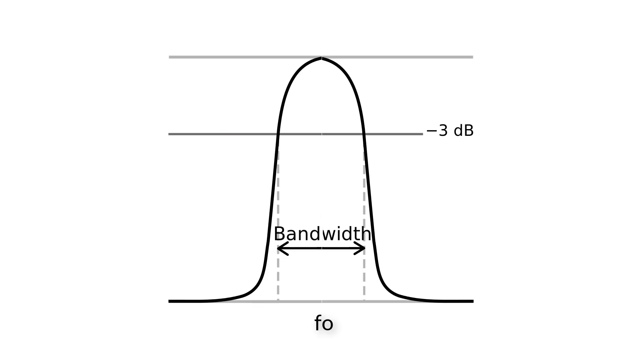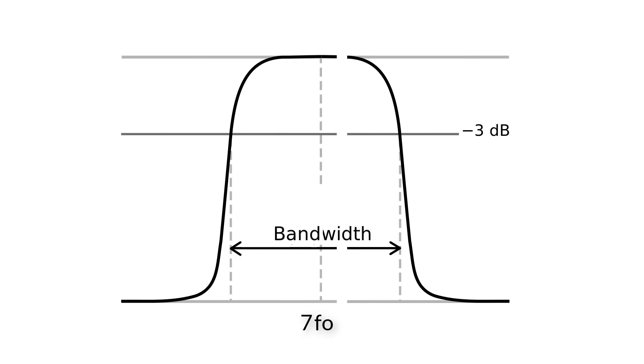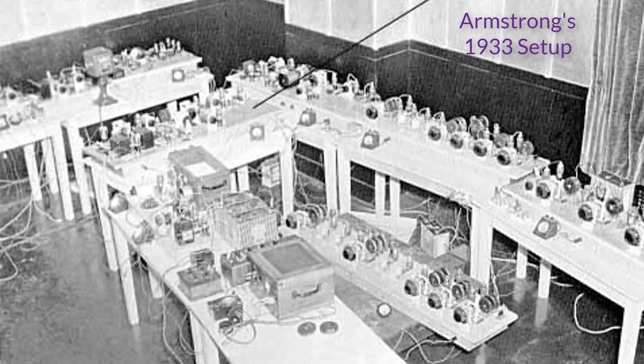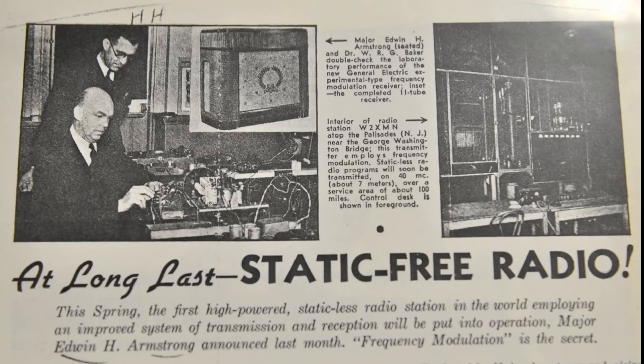It seemed impossible to have the full range of sound and to reduce static. What if you started with a low frequency with small changes and then multiplied it to a higher frequency with large changes, and made the receiver only receptive to large changes? This is called broadband FM radio, and it was not an easy task. It took him until 1933 to get it right, but when he did, it worked even better than he had hoped.